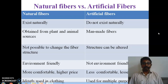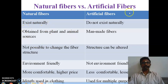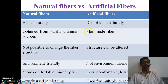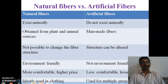Now we will discuss the difference between natural fibers and artificial fibers. Natural fibers are obtained from plants and animal sources, while artificial fibers are man-made manufacturing fibers — also called synthetic fibers. In natural fibers, the fiber structure cannot be changed, but in artificial fibers the structure can be modified and altered.